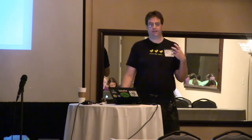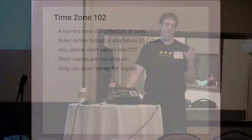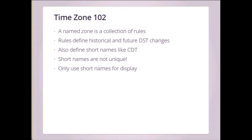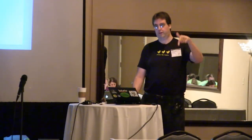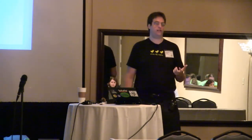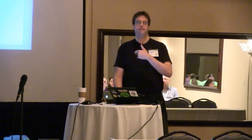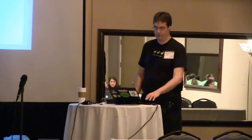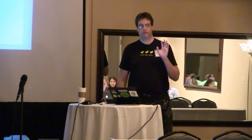What a time zone really is is a collection of rules about historical and future DST changes. It basically says things like 'the last Sunday of March, move the clocks forward an hour at 1am local time' or 'the first Tuesday of October, move the clocks back an hour at midnight UTC.' Time zones also define short names you might be familiar with, like CDT or EDT. I highly recommend not using these for anything other than displaying to end users, because these names are not unique — EST referred to both the Eastern US time zone in winter and a time zone in Australia.